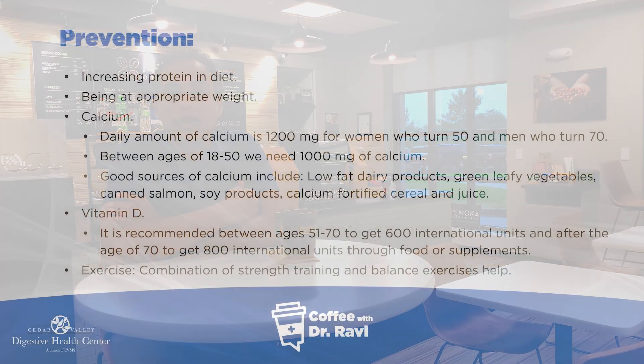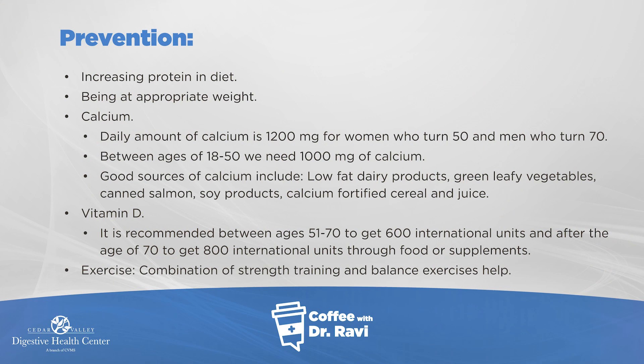From a preventative standpoint, here are things you can do. Number one: maintain appropriate body weight. Number two: get enough calcium. The daily recommended calcium level is about 1200 milligrams for women who turn 50 and men who turn 70, and between the ages of 18 to 50 we need about 1000 milligrams. Good sources of calcium include dairy products, leafy vegetables, salmon, soy, and fortified cereal and juice.